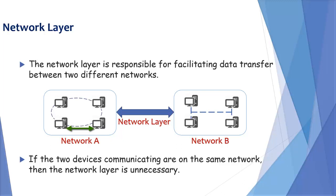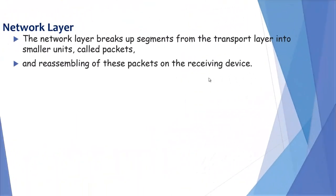Suppose there are two devices on network A and they want to communicate — then there is no role of network layer. Network layer breaks up segments from transport layer into smaller units called packets, and reassembles these packets on the receiving device.